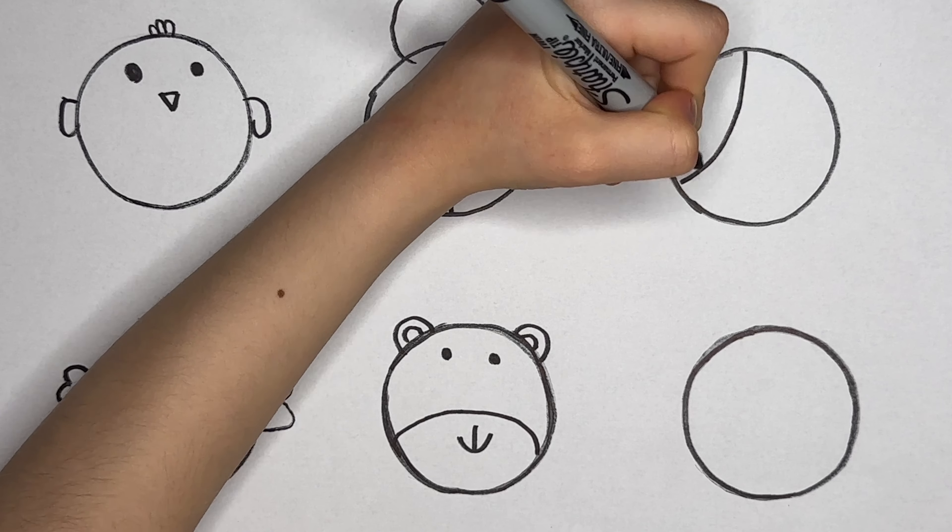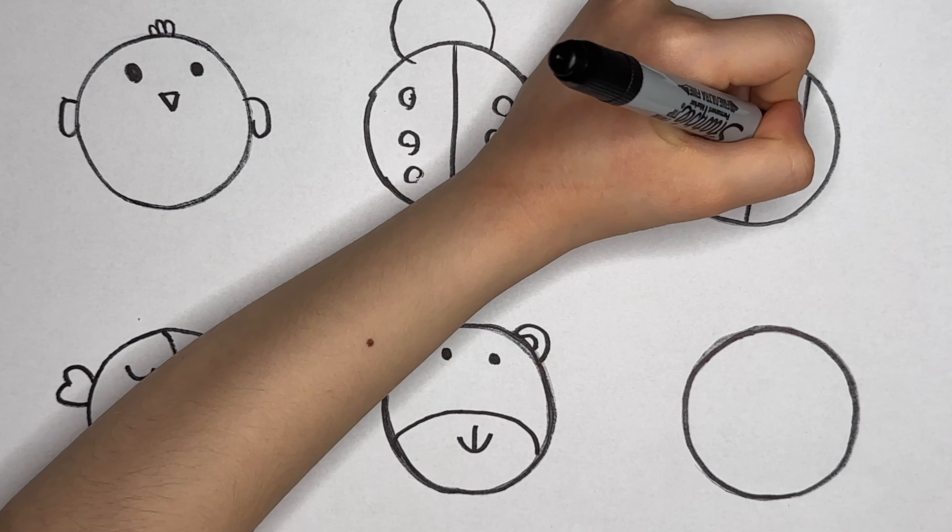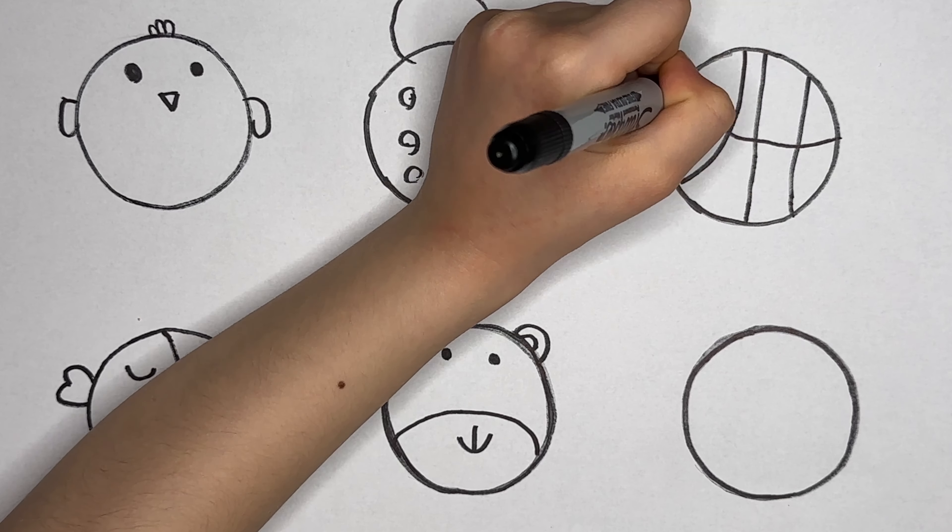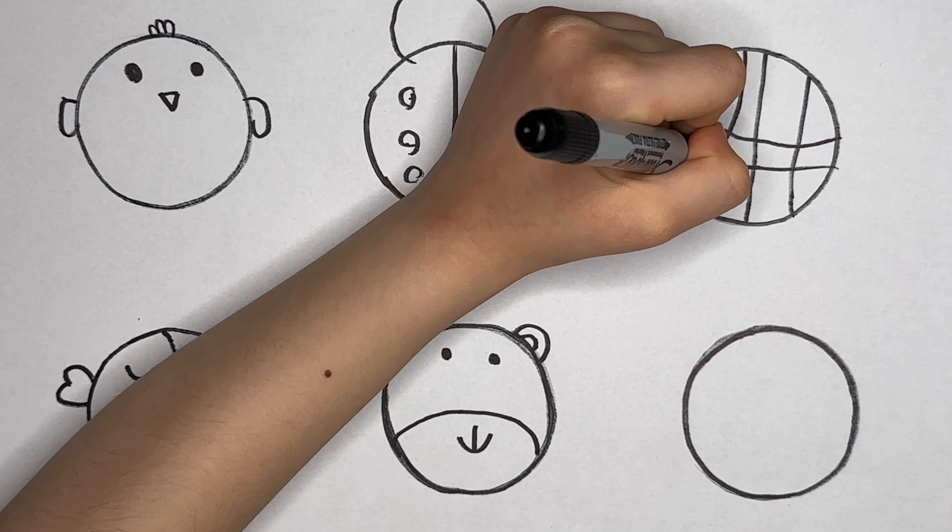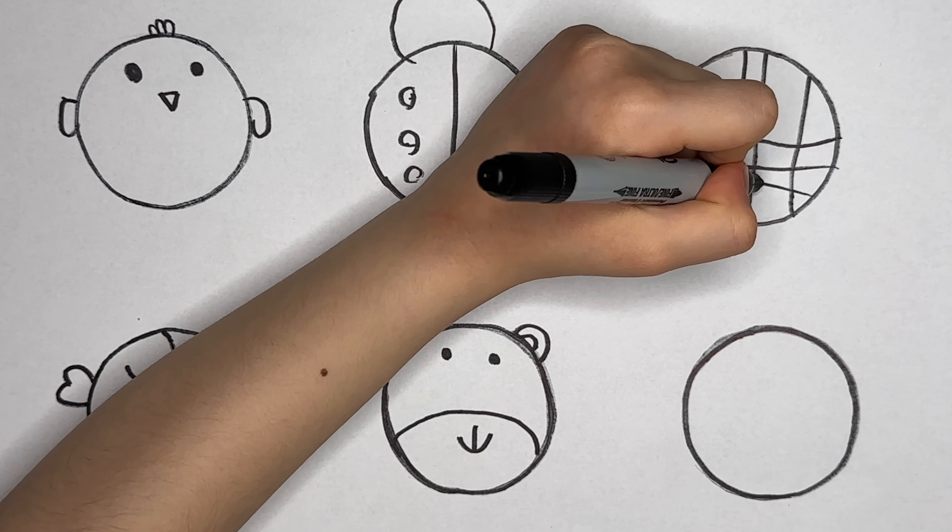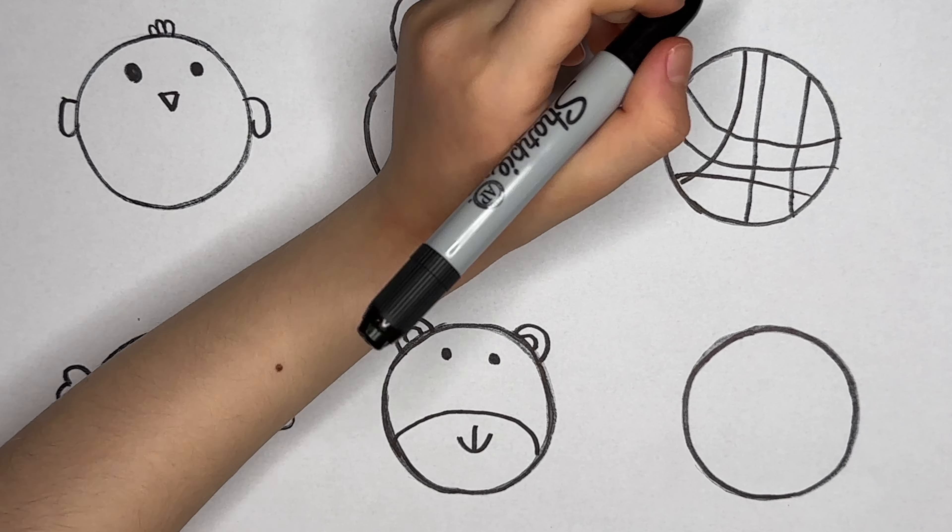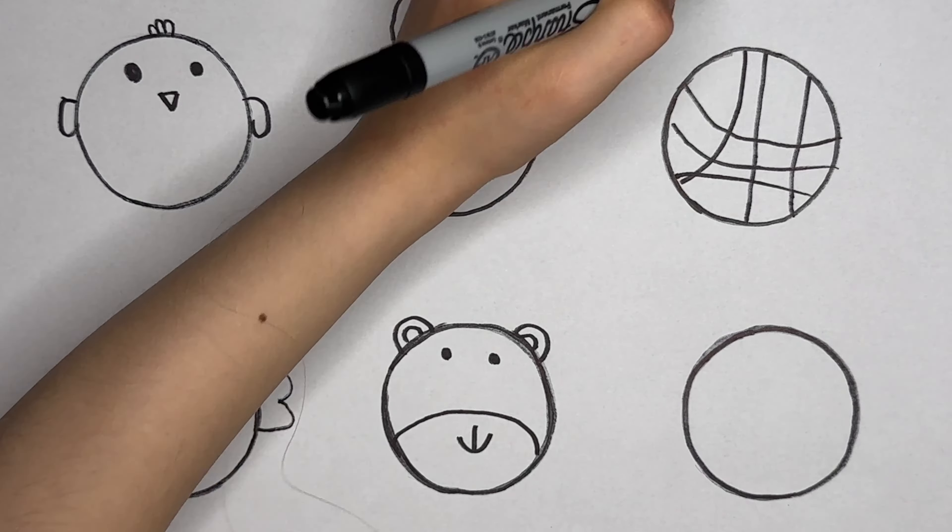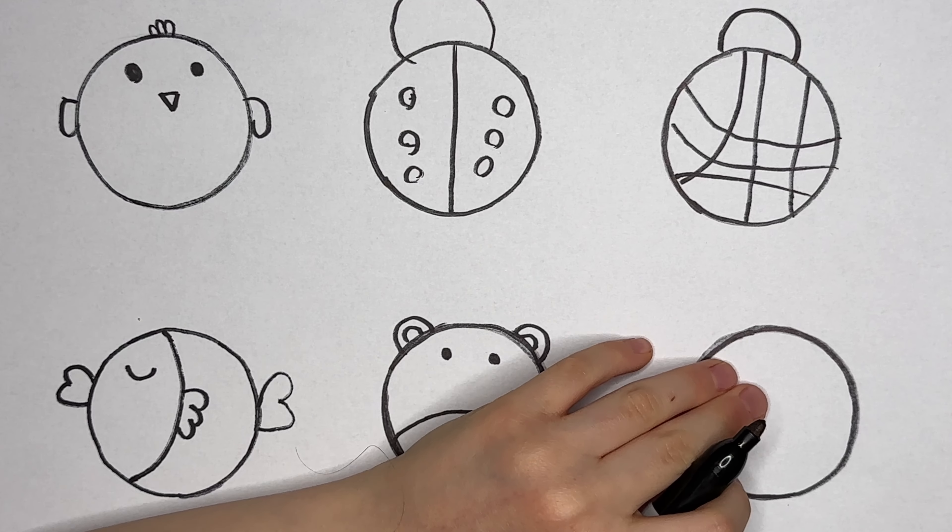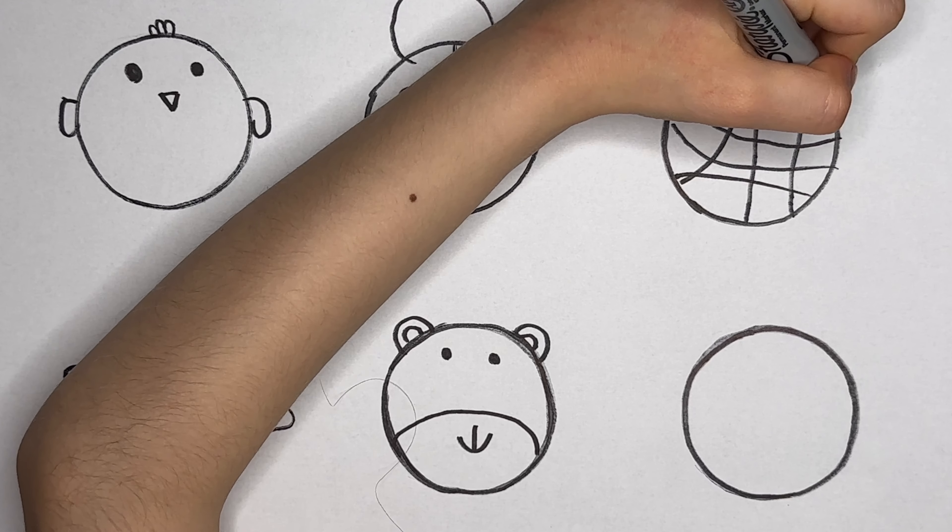The circle is going to be a cute turtle. Lines like this, the head is going to be like this. And the legs.